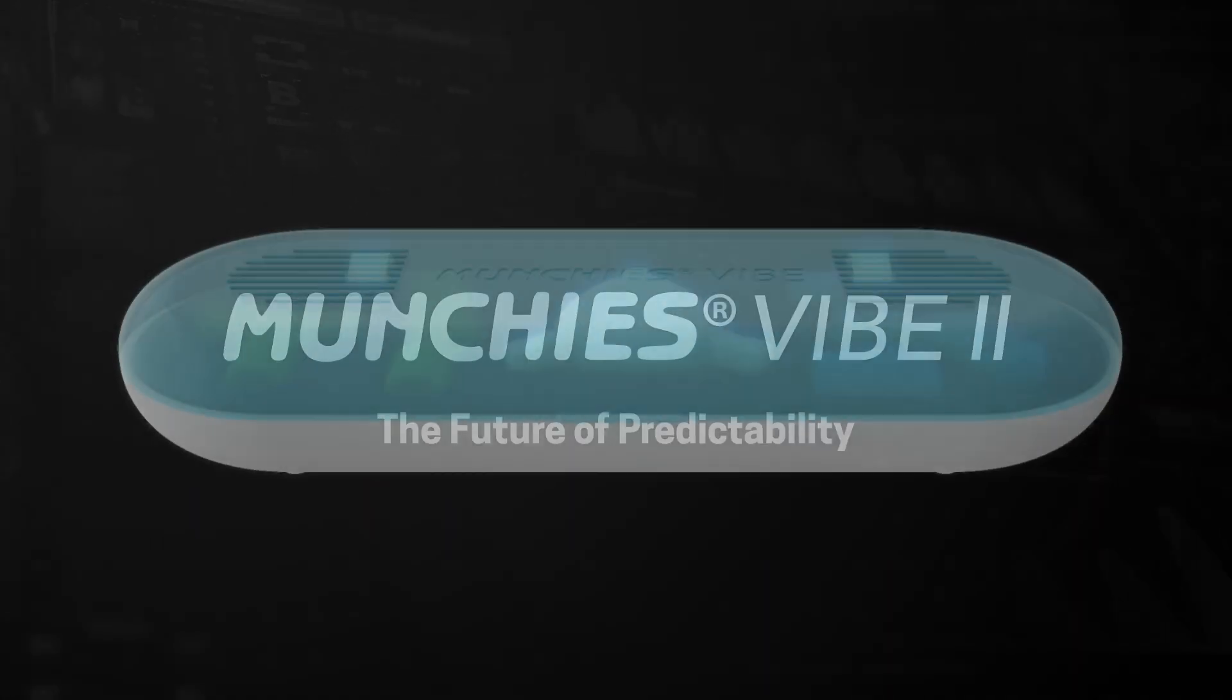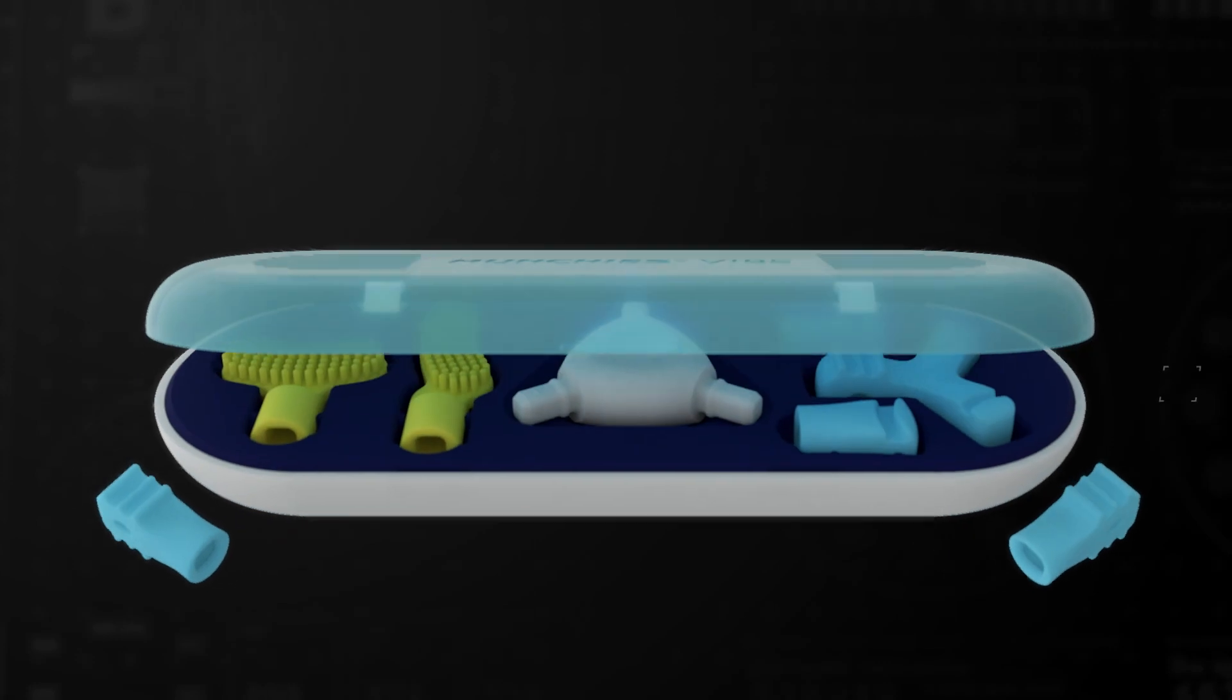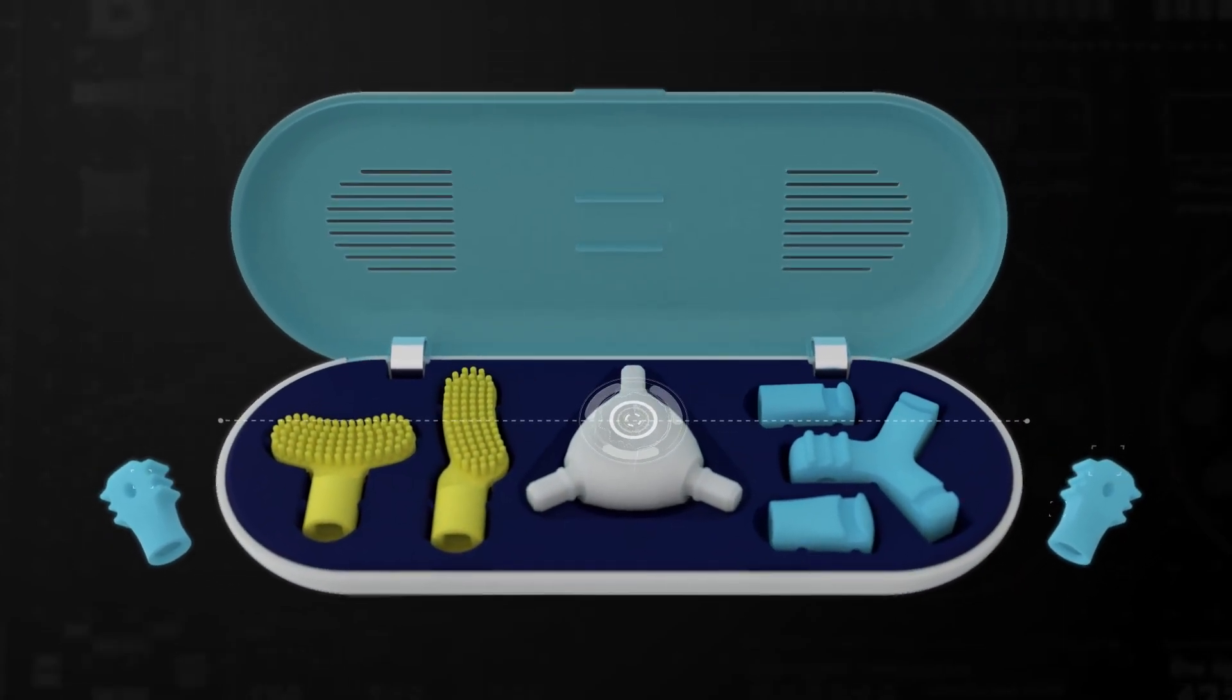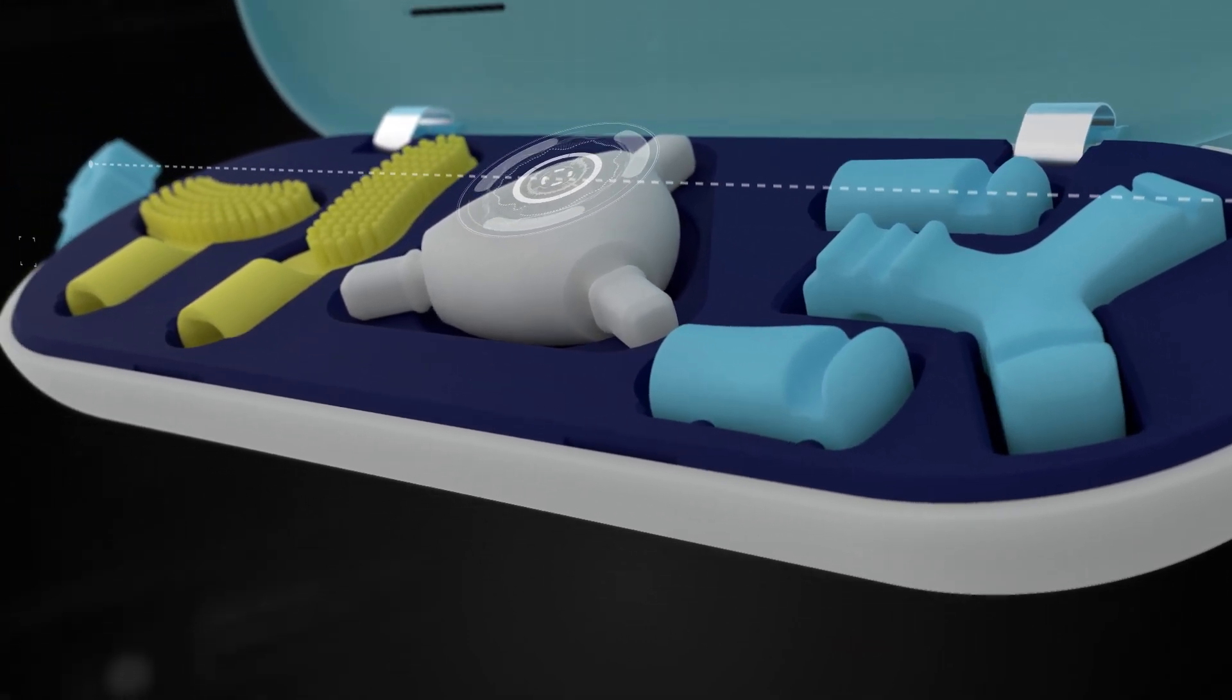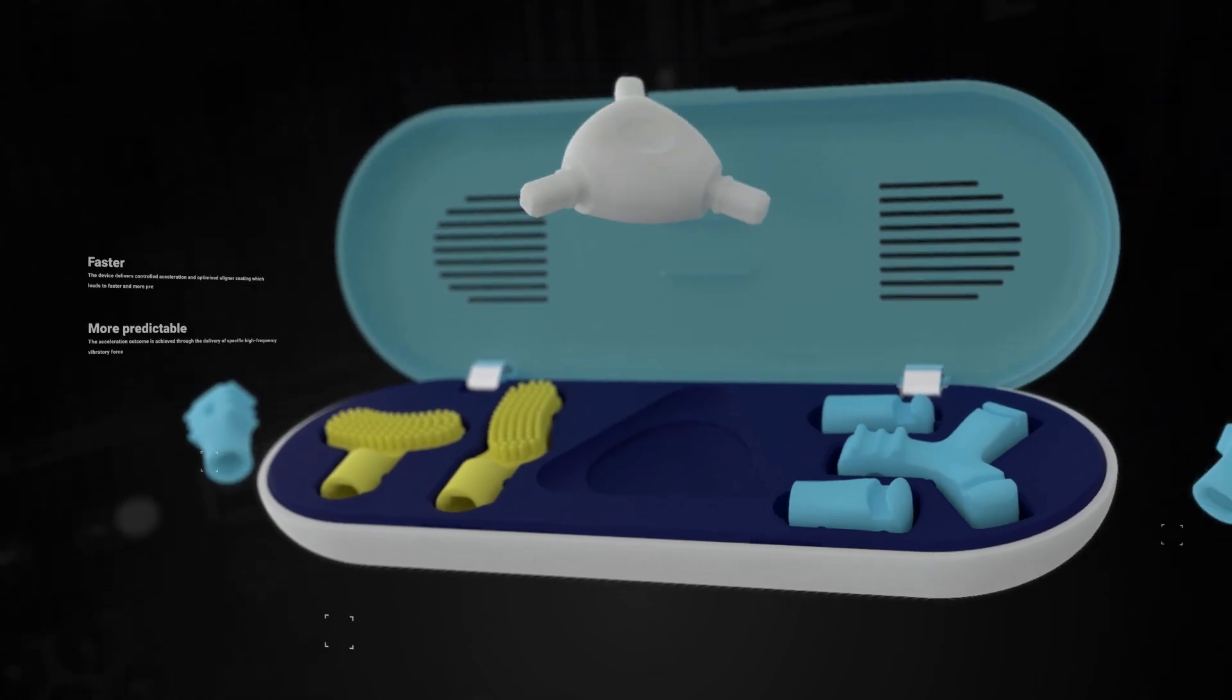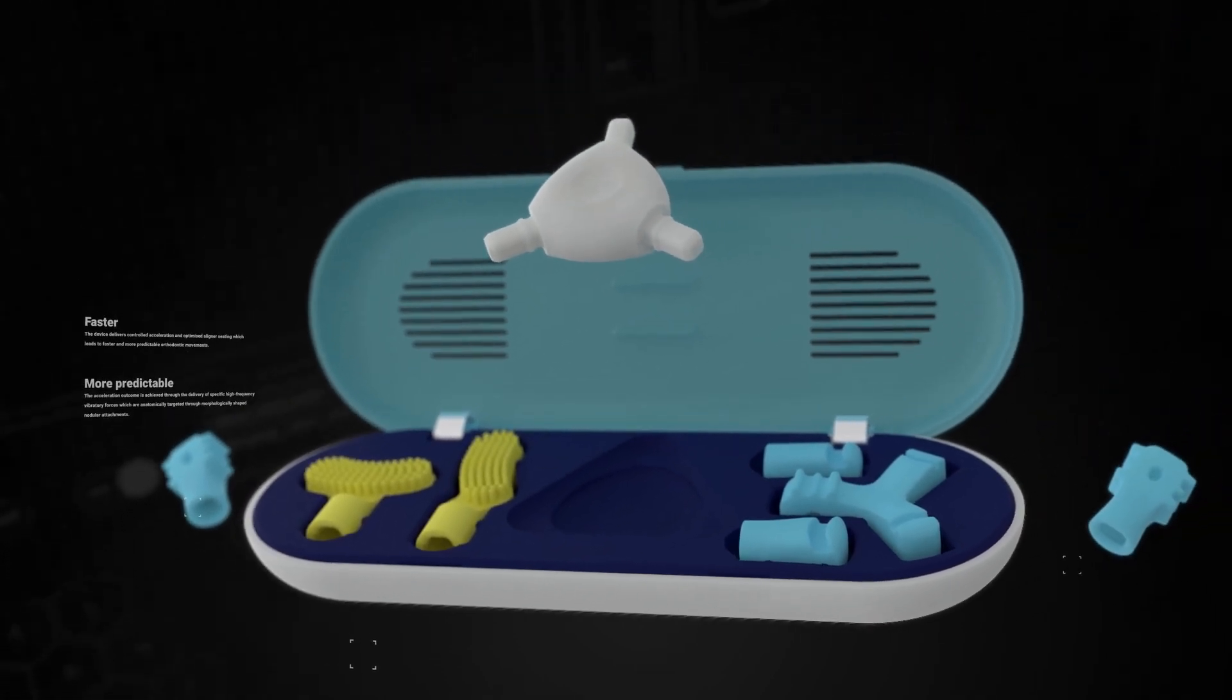Munchies Vibe 2 has been further enhanced to rewrite the future of predictability in clear aligner therapy treatment. The device delivers controlled acceleration and optimized aligner seating which leads to faster and more predictable orthodontic movements.